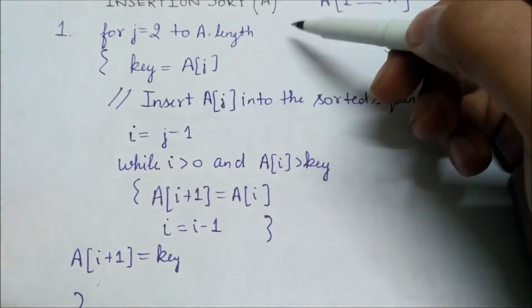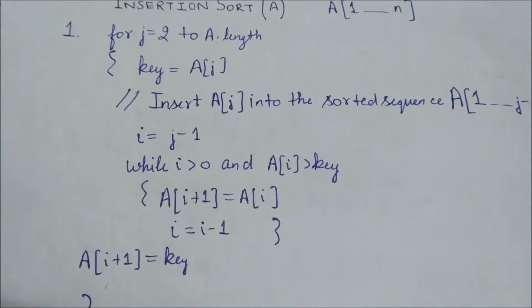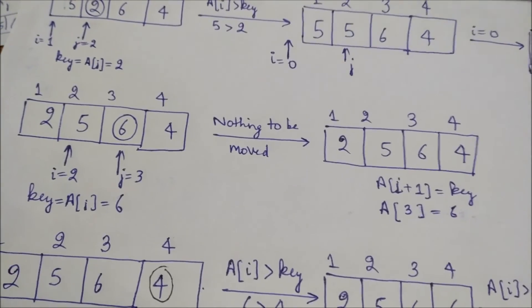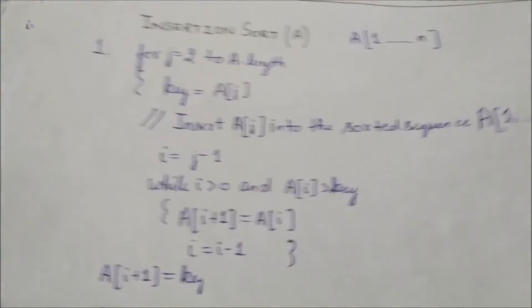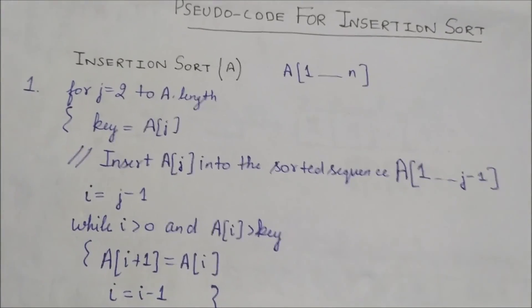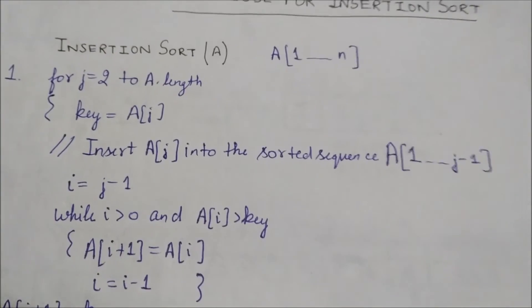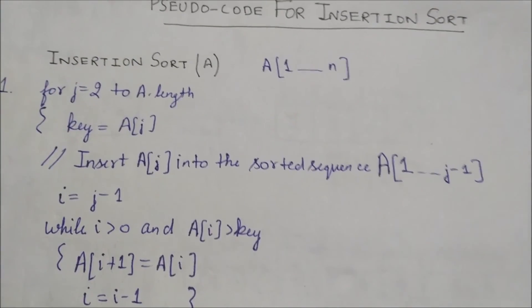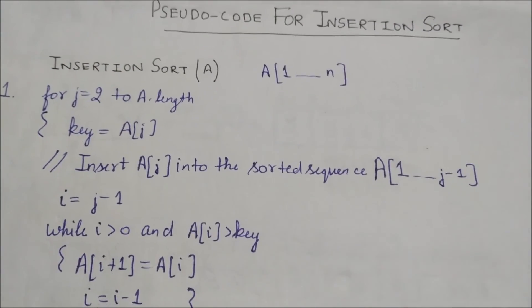We break out of the for loop because we have gone through the full length of the array, which was four in this case. This is how the pseudocode applies to this example. In the next video, we will be seeing the time complexity of insertion sort.